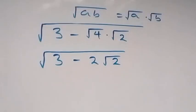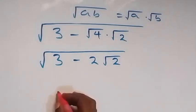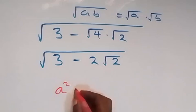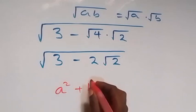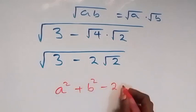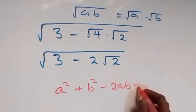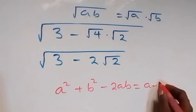And from here what we have from this identity: a squared plus b squared minus 2ab is same thing as a minus b for square.